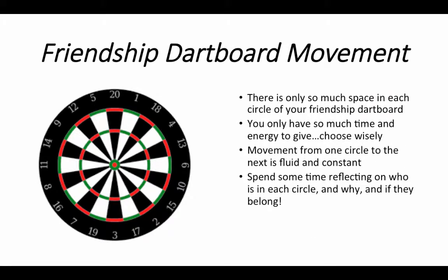Now I'd like to talk about friendship dartboard movement. We defined the characteristics of the three levels of friendship — your inner circle where you trust the most, your intermediate, and your outer circle. There's only so much space in each circle of your friendship dartboard. The inner circle is small, though I think it grows bigger as you get older and you meet more people who prove their worth to be there. You only have so much time and energy to give in friendships — you can't have 15, 20, 25 best friends. It's physically impossible to put the energy and time into making those friendships what they are.